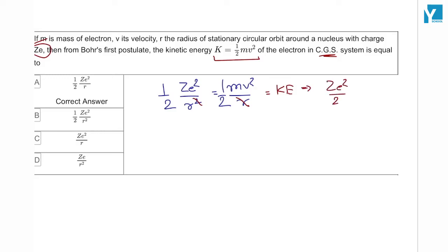Square by 2 over r. Ze² over 2r is your answer.